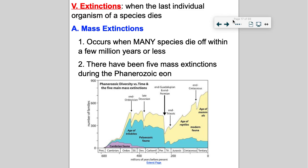The end of the Permian extinction — 90% of life on Earth was probably wiped out. They're not exactly sure, but they think maybe Earth kind of turned into a giant snowball. Earth has been a giant snowball at least three times in history.